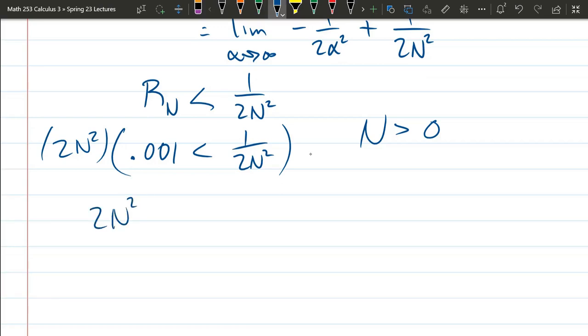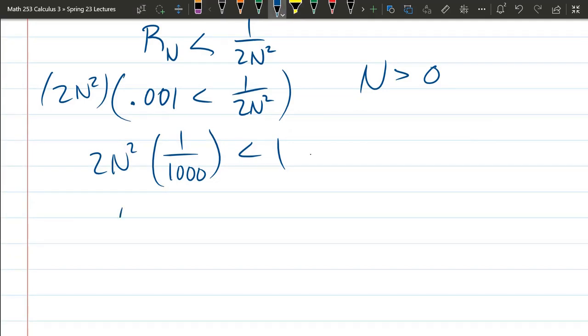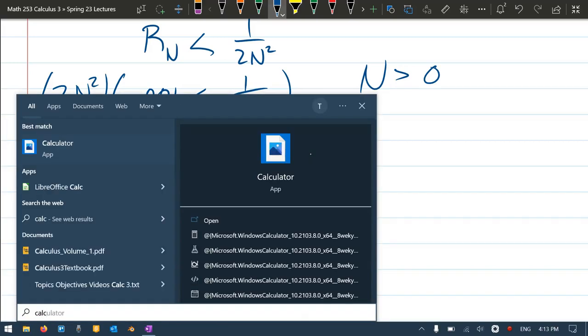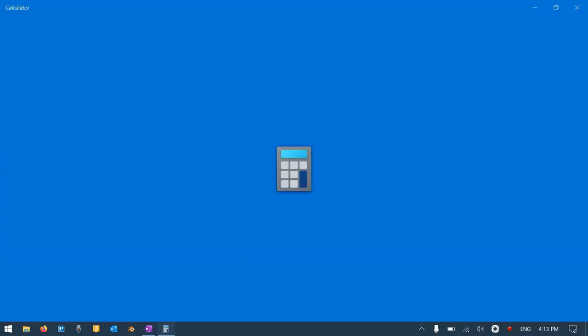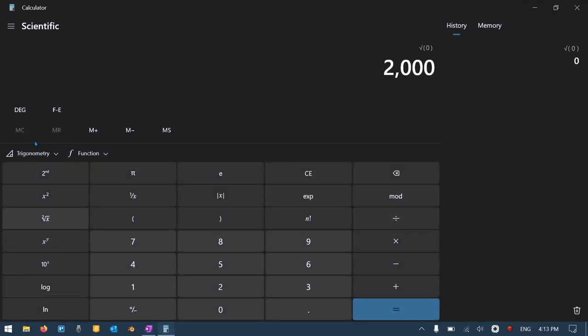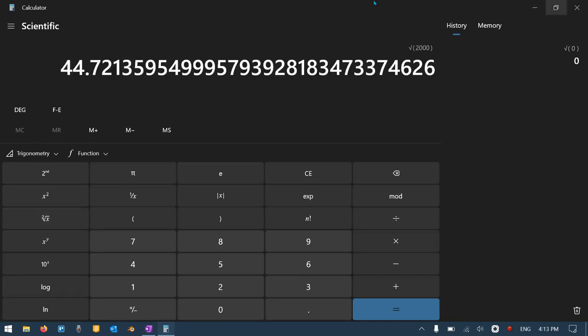It's okay because 2N squared is always positive. 2N squared. This would be a ten hundred thousandth. So this is one over one thousand. That's a way to rewrite that decimal. Now let's multiply by two thousand. Square root. Calculator. Square root. Forty-four. 0.72.